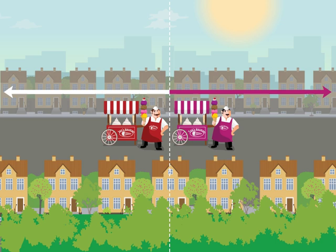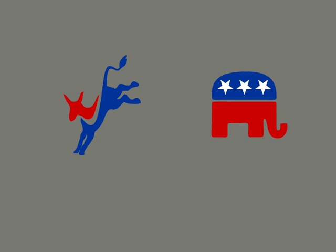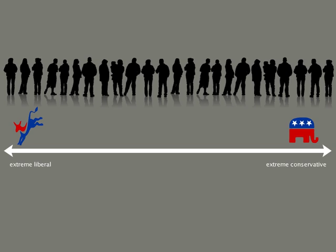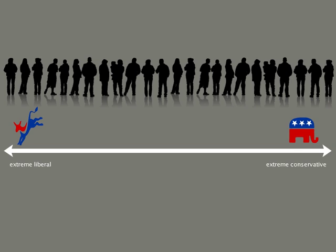Now let's take a look at how the spatial model of strategic firm behavior translates into party strategy in a competitive electoral democracy. Assume now that instead of ice cream vendors, we have parties. And instead of selling ice creams, each party espouses a particular ideology, which can be mapped on a unidimensional ideological space running from extreme liberal to extreme conservative. We will assume that the voting population is equally distributed along this ideological plane.